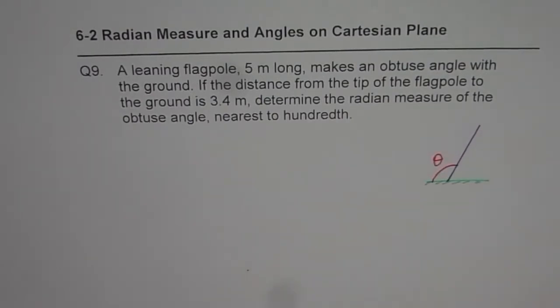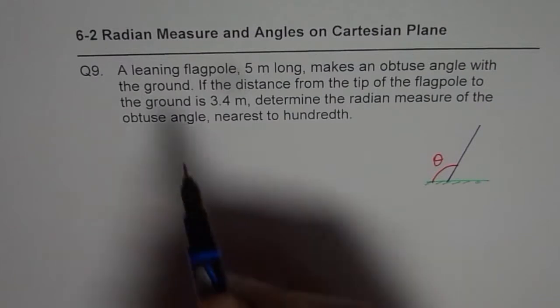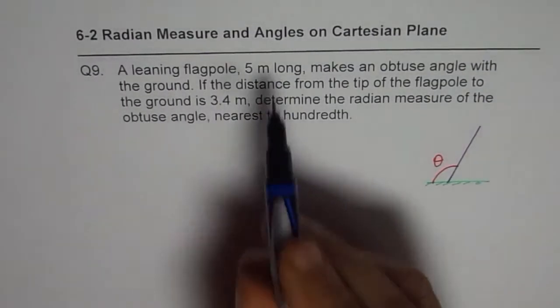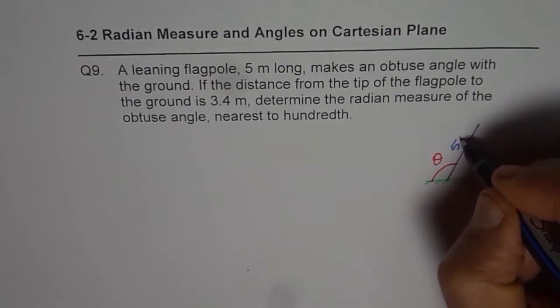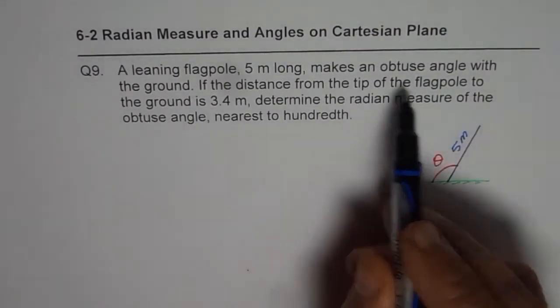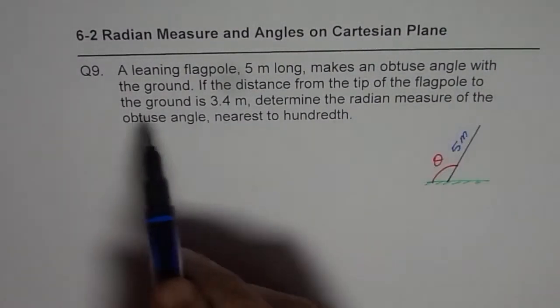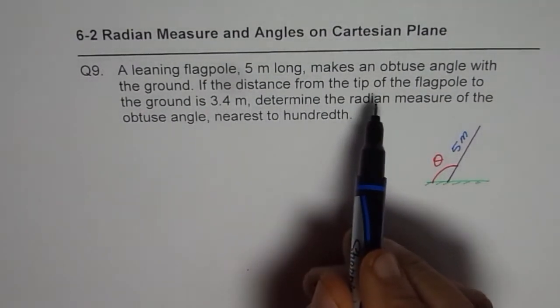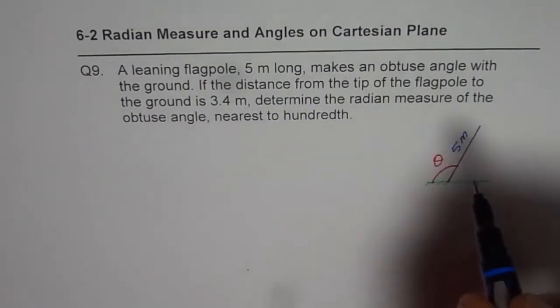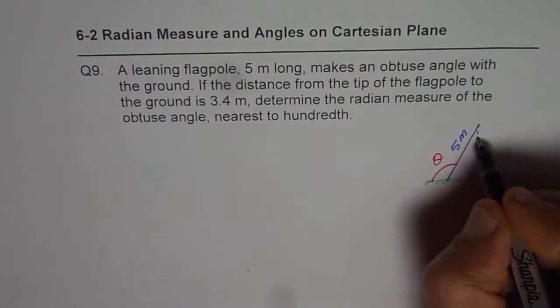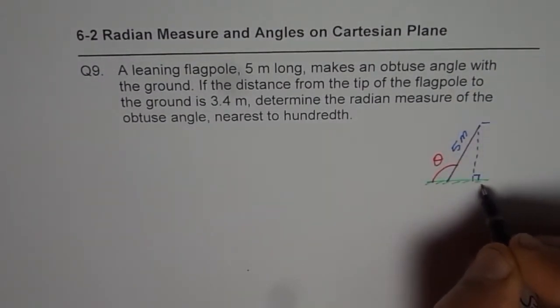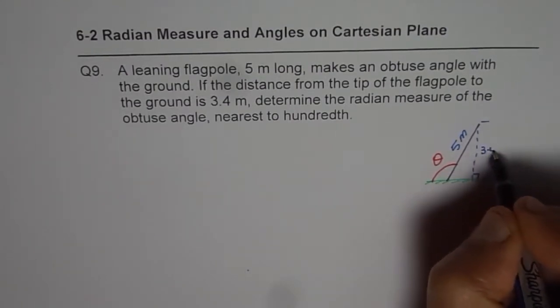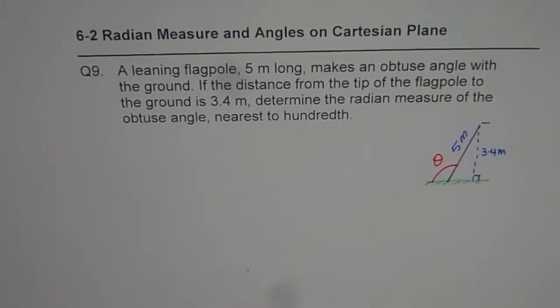What we are given here is the leaning flagpole is 5 meters long. That means this length itself is 5 meters. It makes an obtuse angle theta with the ground. If the distance of the tip of the flagpole to the ground is 3.4, that means if I drop this perpendicular, then this distance from the tip to the ground is 3.4 meters. That is what is given to us.